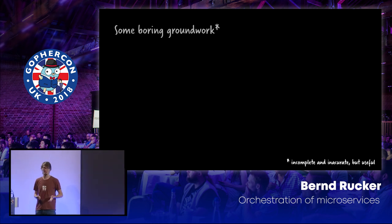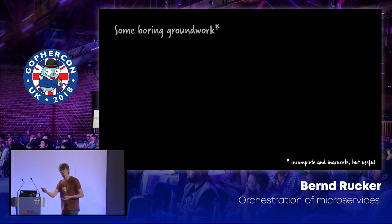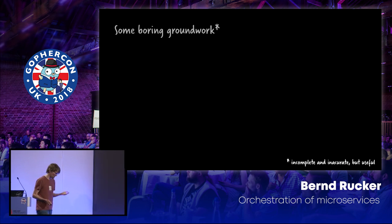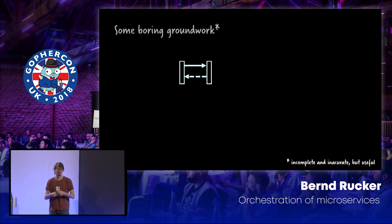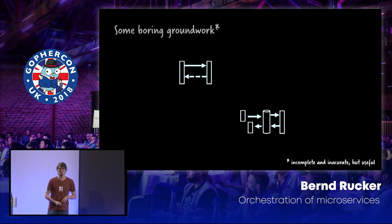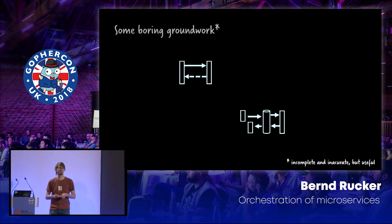This is a lot about communication. These services need to communicate with each other in order to do something. It's remote communication — we are talking about distributed systems. We basically have a couple of options. The first one is just doing request-response: it could be REST, it could be gRPC, all these kind of things. Who is doing something like this? That's the majority of folks. The other thing you normally do is messaging or eventing, like Kafka, RabbitMQ, or something like that. Who is doing that? It's about half-half here — that's actually a good ratio. Normally it's like 80-20.